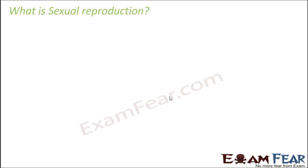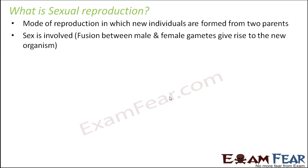Now again from the very basics, what is sexual reproduction? It is that mode of reproduction in which new individuals are formed from two parents, so having two parents is a must. As soon as you talk about two parents, you talk about two different sexes, that is male and female. So here sex is involved — that is fusion between the male and the female gametes is involved.